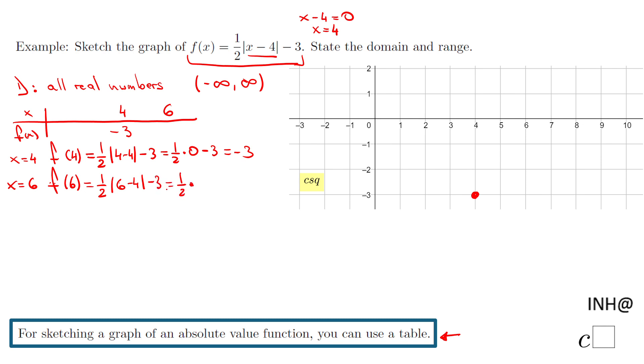One-half times 6 minus 4 is 2. Absolute value of 2 is 2. That's the reason, because these two guys cancel out. If you use 5, that's not bad, but you're gonna get a decimal or fraction. So that will be 1 minus 3, which is negative 2. This is my second point.